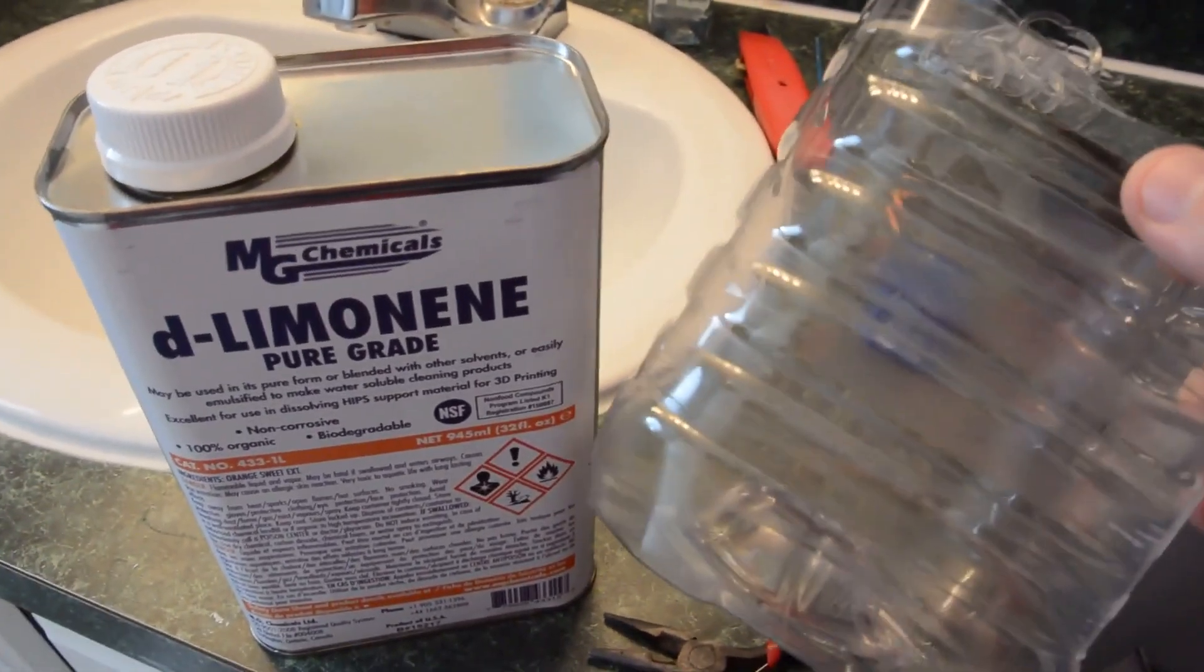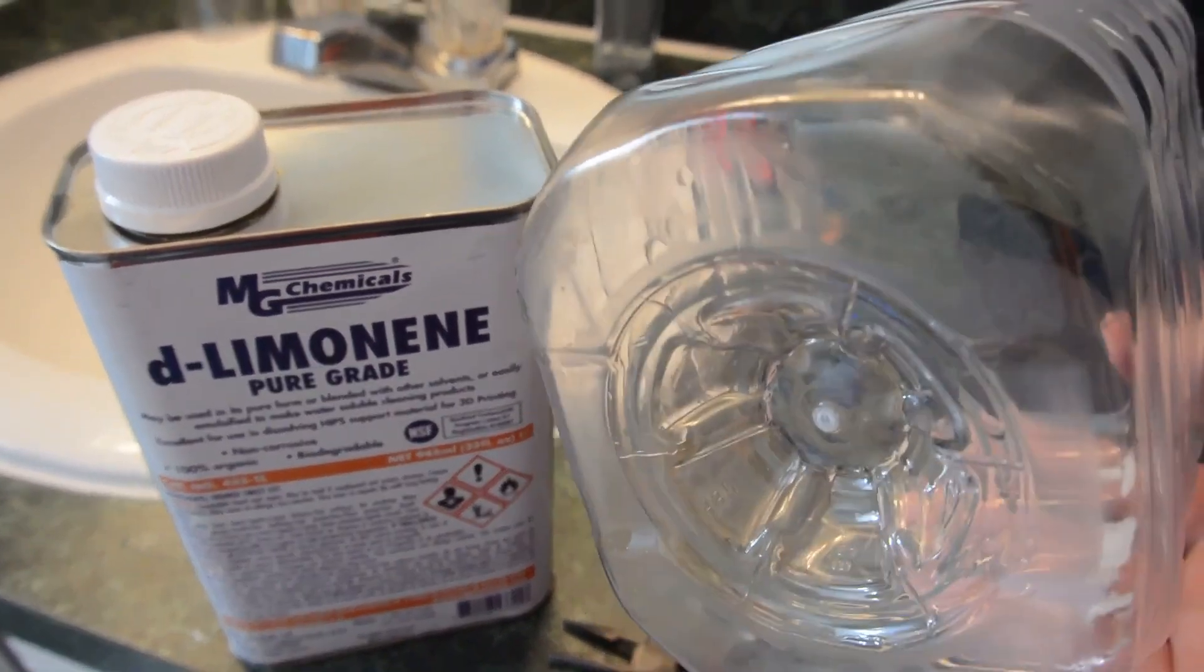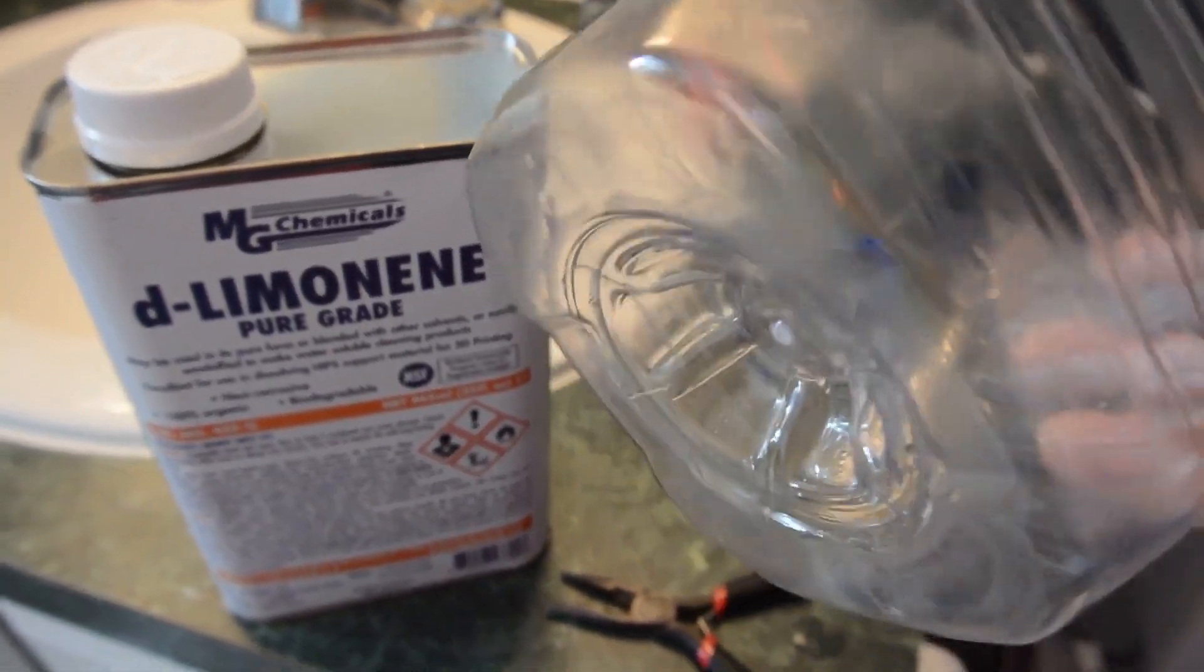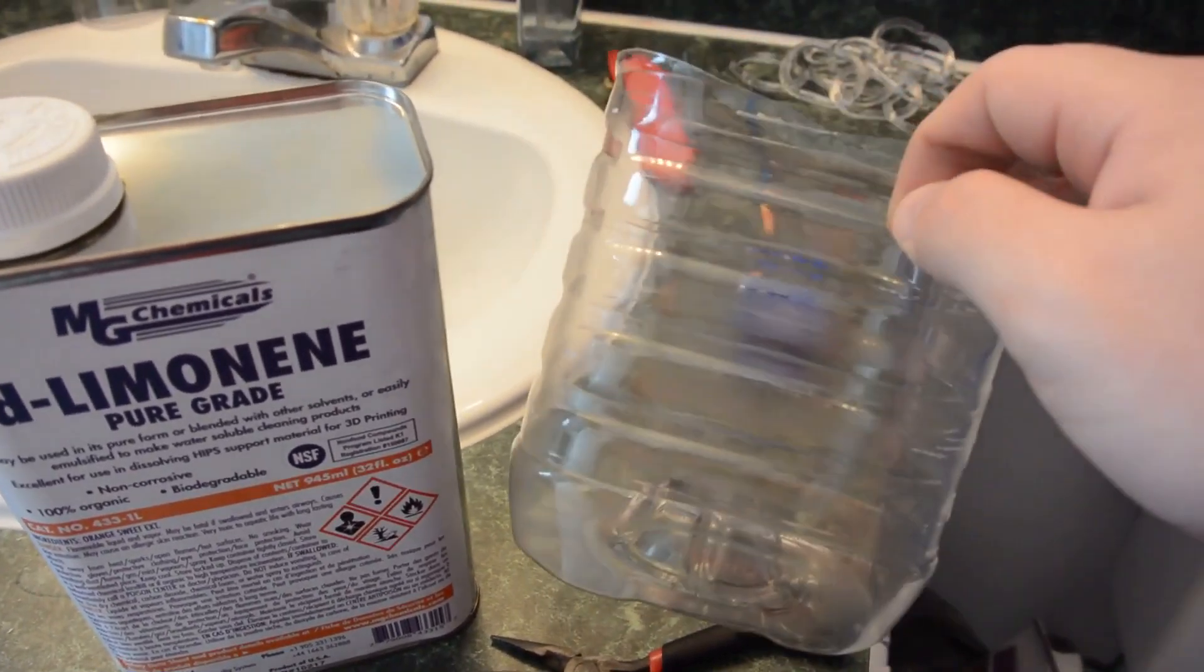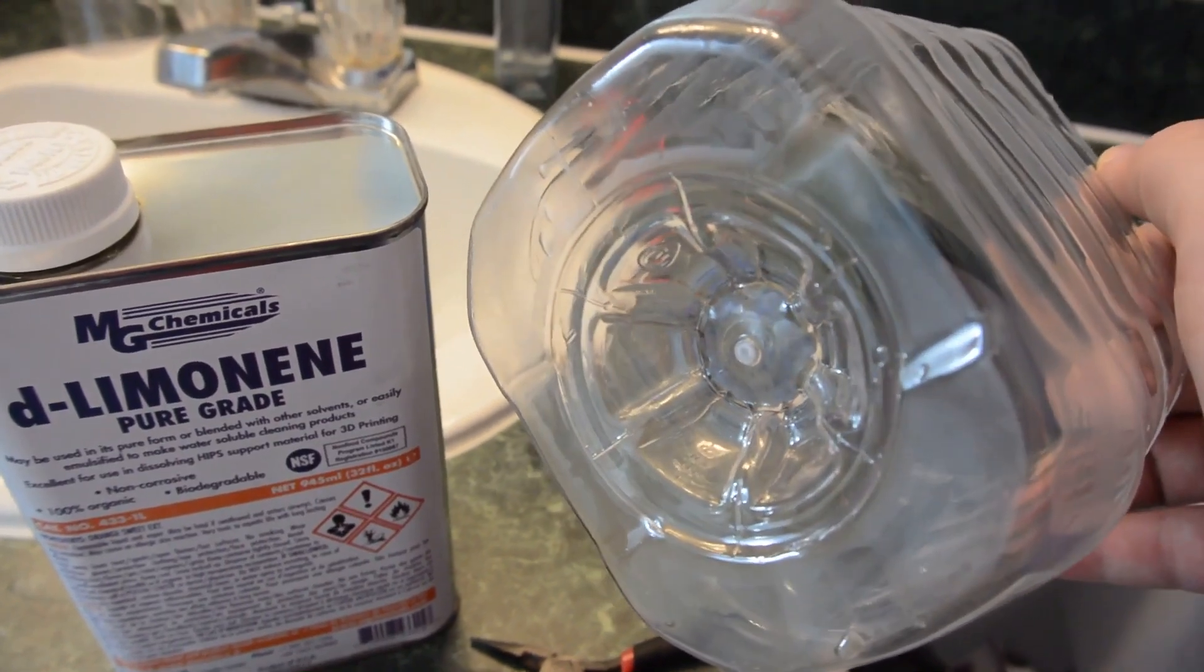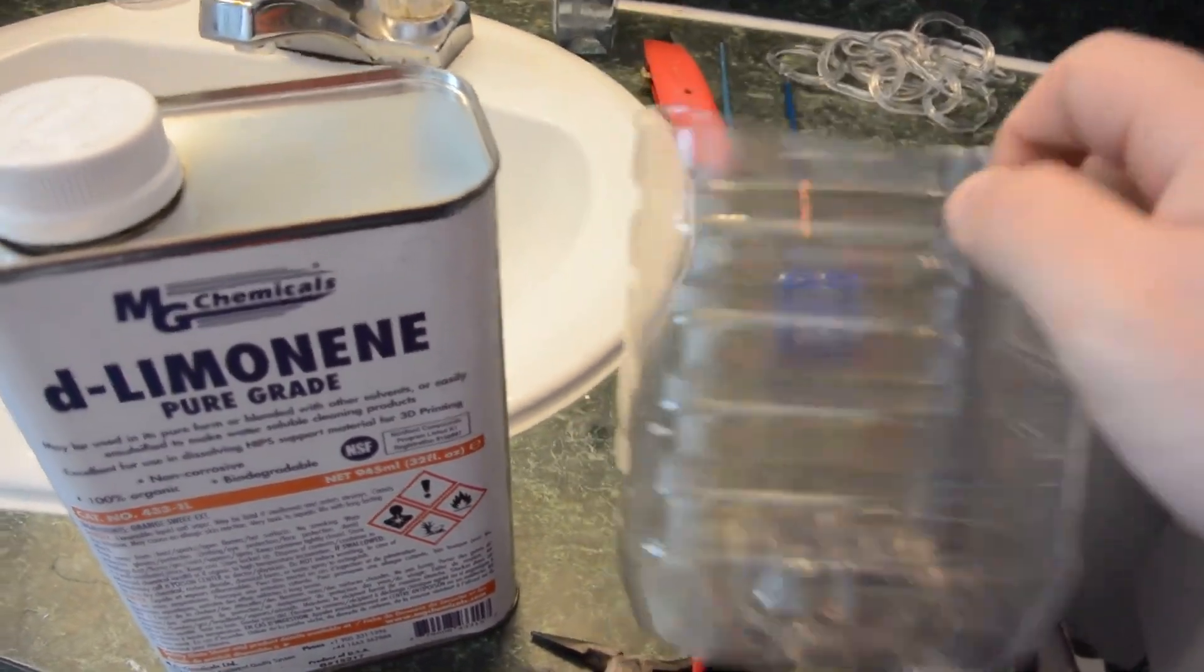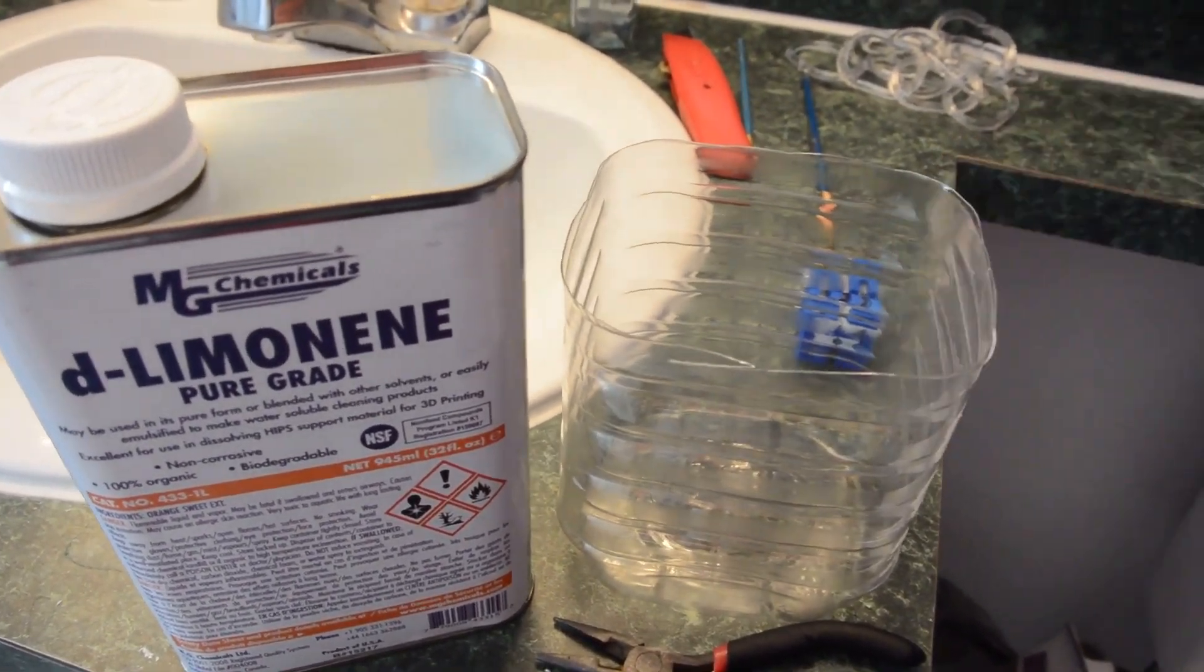And what you need is some kind of container that the limonene won't dissolve in order to hold it. One common household plastic that you can use if you don't have a giant glass jar around is PET or PETE. They're the same thing. It's a plastic most commonly found on 2-liter bottles, like Coke bottles and fruit juice bottles, that kind of stuff. Just take it and look at the bottom and look for P-E-T or P-E-T-E. And you can use that to pour your limonene into and it won't dissolve away. I just have an old fruit juice bottle here that I cut the top off. And I'm going to use that to store it while I put the print in.